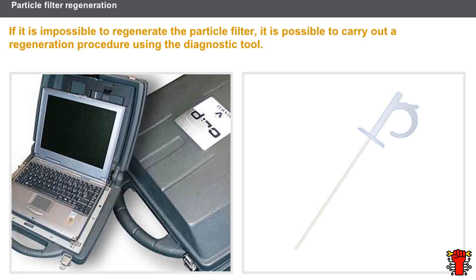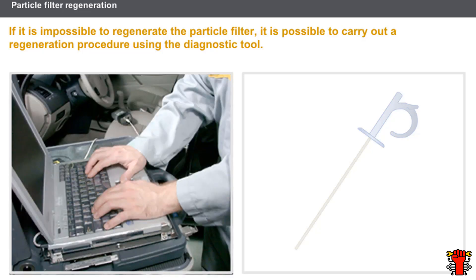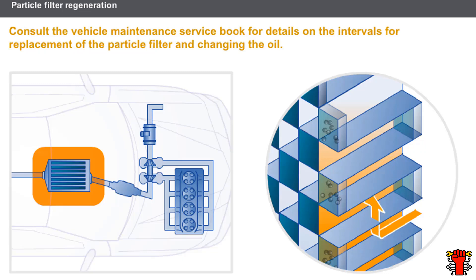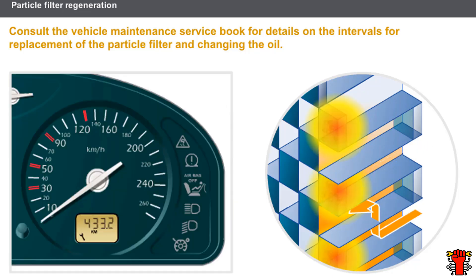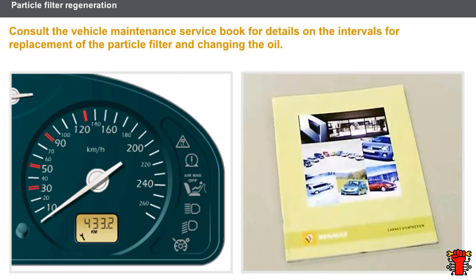If it is impossible to regenerate the particle filter, it is possible to carry out a regeneration procedure using the diagnostic tool. This command enables the particle filter to be regenerated when the vehicle is stationary. Before carrying out any regeneration procedure using the diagnostic tool, it is essential to make sure that the oil level does not exceed the max mark on the dipstick. When carrying out the operation, a thinning phenomenon increases the engine oil level. It is essential to drain the engine oil after all regeneration operations carried out in after sales. Renault recommends the periodic replacement of the particle filter, as a tiny amount of unburnt residue remains after each regeneration phase and will over time clog the filter. Engines using a particle filter require a reduced oil change service interval.